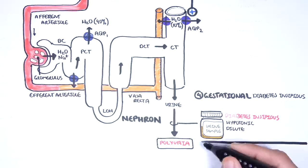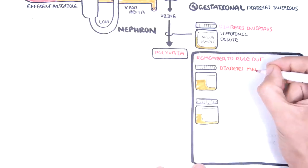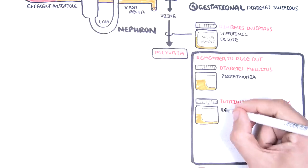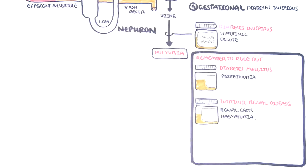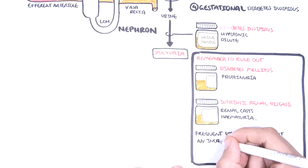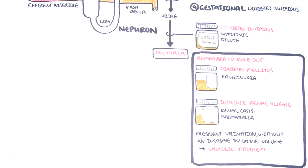It's important to rule out other causes of polyuria when doing a urine sample. For example, diabetes mellitus is a differential for polyuria — in a urine sample you can look for proteinuria and history of diabetes mellitus. Another differential is intrinsic renal disease, where you can look at renal casts as well as hematuria. Also note that frequent urination without an increase in urine volume suggests urological problems such as the prostate, which is different from diabetes insipidus.